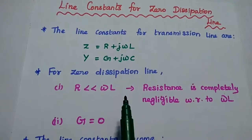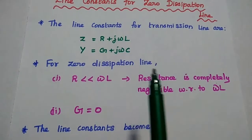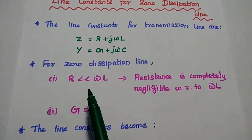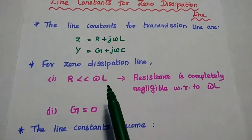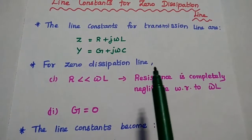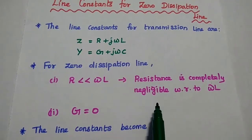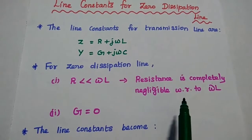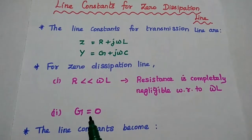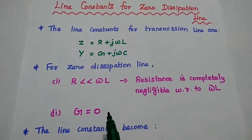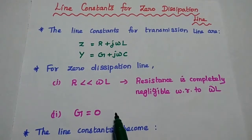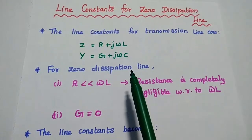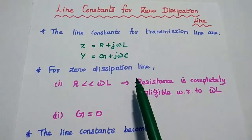For zero dissipation line, we have to assume two conditions. The first one is the resistance value is far less than omega L — that means resistance is completely negligible with respect to omega L due to the skin effect. The second condition is conductance G is equal to zero. These two are the important conditions for the dissipationless, or zero dissipation, line.